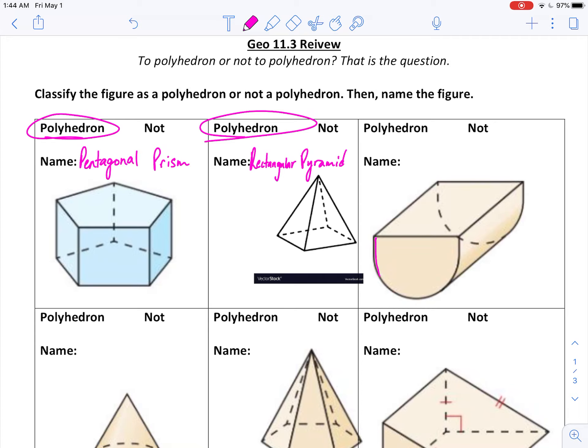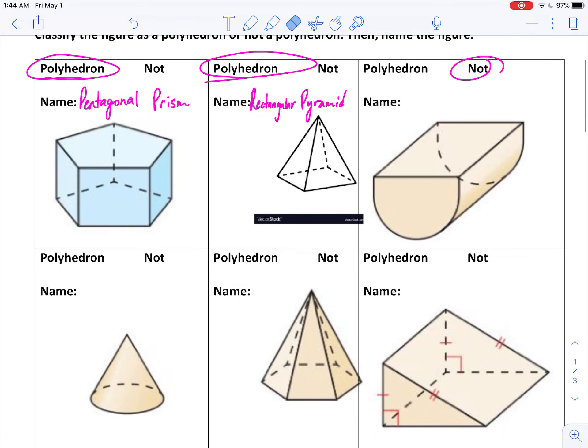Number 3 I have this curved side that is not a polyhedron. I don't need to name that. Number 4, this is all curved. So all of this is curved. So it is not a polyhedron.